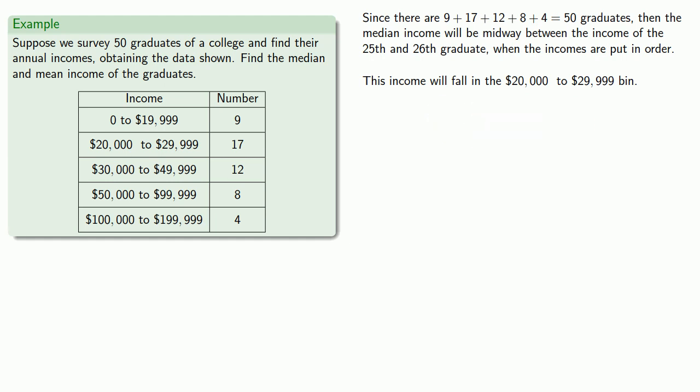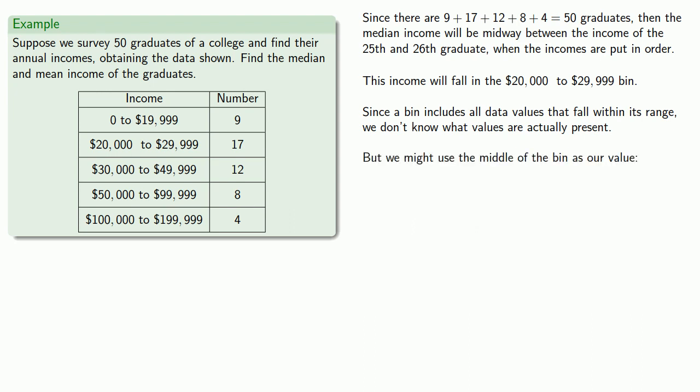The problem is we don't actually know what the income of the 25th and 26th graduates are, so how can we find the median? Since a bin includes all data values that fall within its range, we don't know what values are actually present, but we might use the middle of the bin as our value. So we might take the median, $20,000 plus $29,999 over two is $24,999.50. Now we can't use this number because that would commit us to all six significant figures, so we might say the median is $25,000.